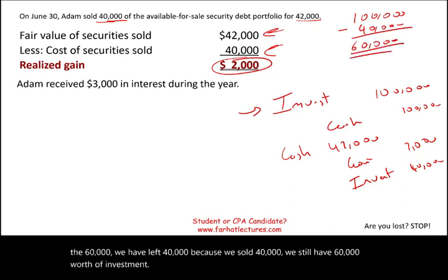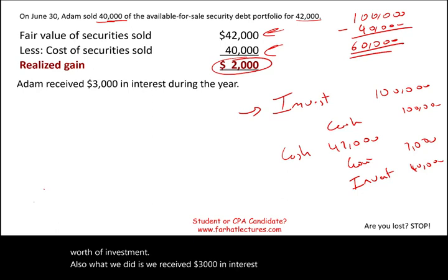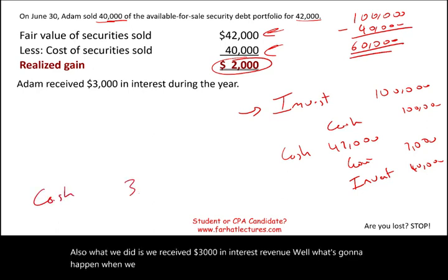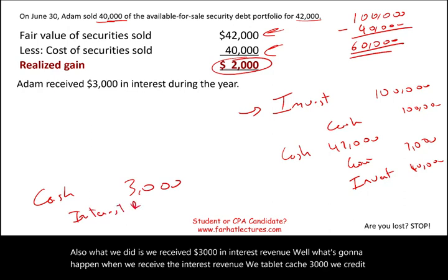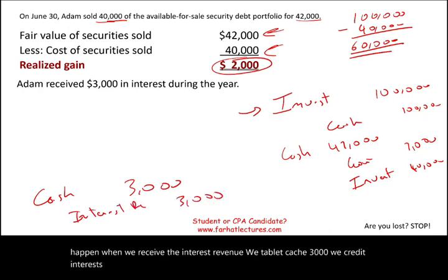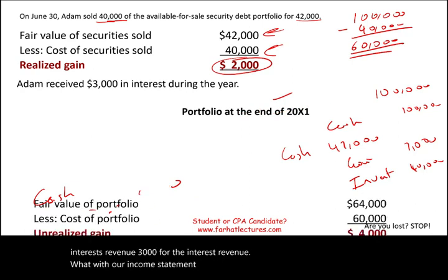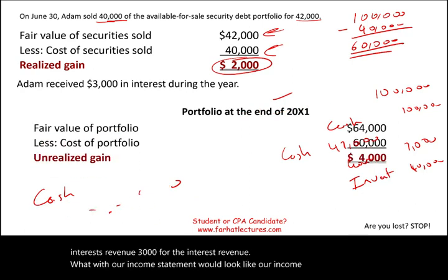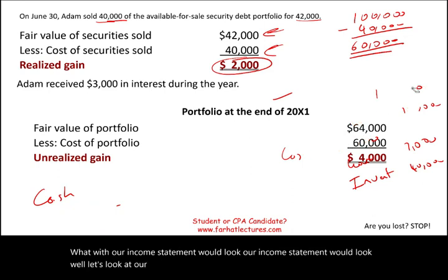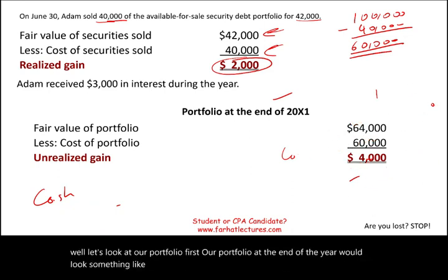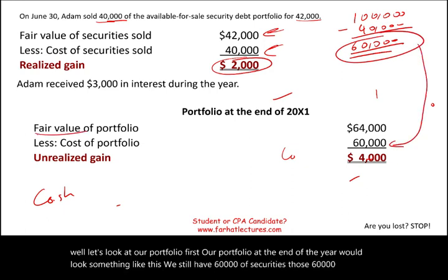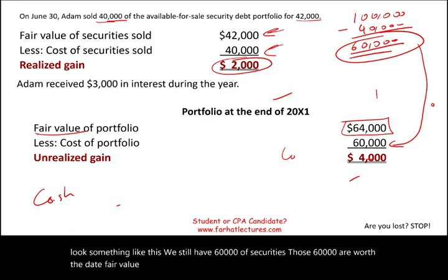We also received $3,000 in interest revenue, debiting cash $3,000 and crediting interest revenue $3,000. Now let's look at our portfolio. At the end of the year, we still have $60,000 of securities. Those $60,000 are worth $64,000 at fair value. So we have a cost of $60,000 and fair value of $64,000, giving us an unrealized gain of $4,000.